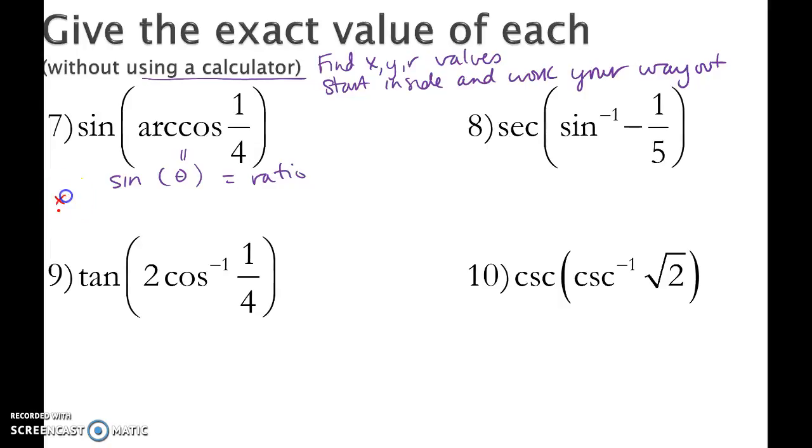So what I'm going to do is find the x, y, r for the angle. I know that x is 1. I know r is 4. Pythagorean theorem, I get that y is square root 15. Because this is a positive ratio, I know with cosine, if it's a positive ratio, the answer is in quadrant 1. I know that my y value is positive.